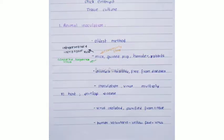The first method is animal inoculation. It is the oldest method, and the animals used in this method are mice, guinea pigs, hamsters, rabbits, and monkeys. Mice are the most commonly used animal, and they are used for cultivation of Coxsackievirus and togaviruses through intracerebral and intranasal routes.